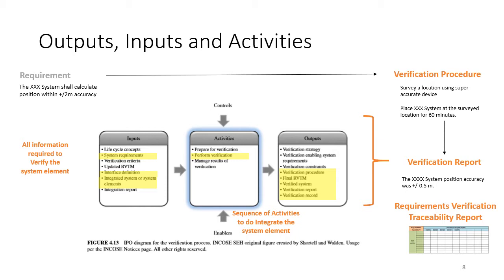With regards to the outputs, there is a verification procedure - the instructions on how to do the test. The results of those tests are documented in a verification report. To make sure that all the requirements have been verified, there's something called the requirements verification traceability report, a mapping between requirement and verification test procedure. The RVTM for matrix identifies or confirms that every requirement has been verified and that the verification test maps back to a requirement.